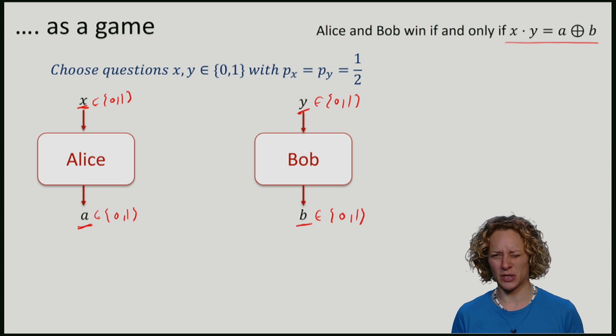Alice and Bob really try to win the game. We allow them to agree on any strategy they want beforehand, but during the game they are forbidden to communicate. Indeed, you can see that if Alice and Bob could communicate during the game, they would always be able to win the game.